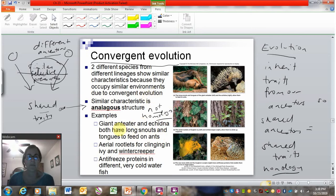So for example, we can consider the giant anteater and the echidna. The giant anteater is from Africa, and the echidna is from South America. Because they're on different continents, we know that they're from different lineages. They don't have a close recent ancestor. Now they're both mammals, so they way back in time had a shared ancestor, but not a recent one. So they're considered different lineages on those different continents.